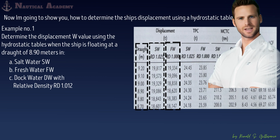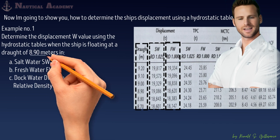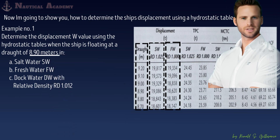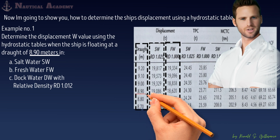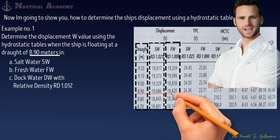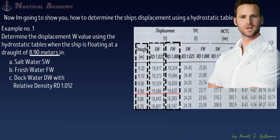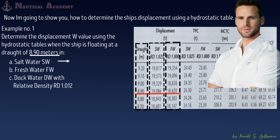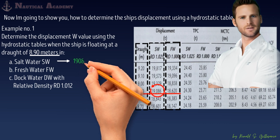In finding the ship's displacement using a hydrostatic table, first we need to determine the ship's mean draft, which in this problem is 8.90 meters. Then we go to our hydrostatic table and find the draft of 8.90 meters in the first column. In that row, the second column gives the ship's displacement in salt water. So the answer for letter A — the ship's displacement in salt water at a draft of 8.90 meters — is 19,086 tons.